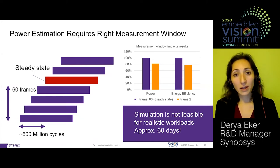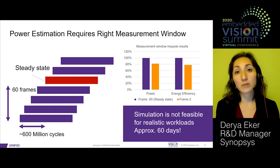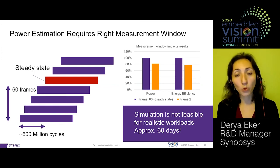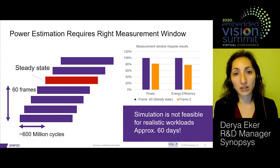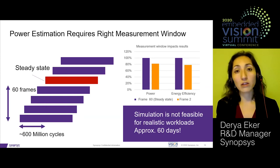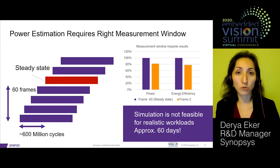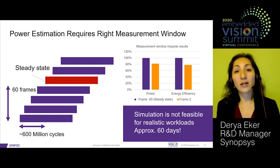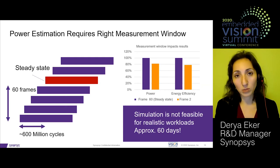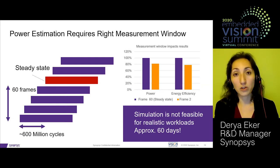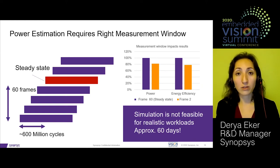To achieve higher throughput, it's common to process multiple images simultaneously, either in pipeline or batch mode. This may require simulating multiple frames until the system reaches steady state. You need to simulate multiple frames, zoom in on the right activity window, extract the switching activity, and feed it to power estimation tools. Simulating even a single frame is already challenging, so taking many frames makes it infeasible with simulation alone. You should consider introducing emulation-based power estimation for such challenging workloads.